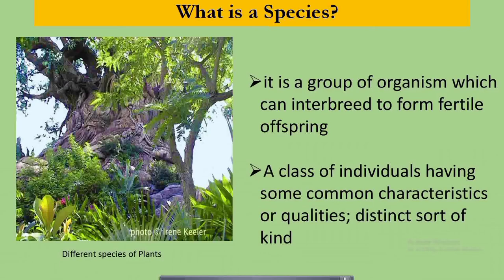Moving on — but first, what is a species? It is discussed that it is a group of organisms which can interbreed to form fertile offspring. Also, it is a class of individuals having some common characteristics or qualities — a distinct sort or kind. The picture shown is an example of different species of plants. Now that we're already familiar with the term species, let's talk about its role.